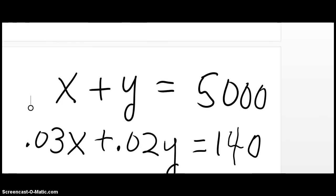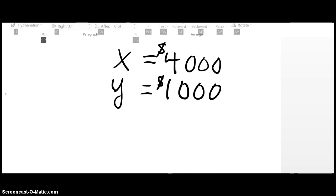Just like we did with the mixture problem, we sum up the W column: X plus Y equals $5,000. And we sum up the P column: 0.03X plus 0.02Y equals $140. Solve those systems of equations and you get X, the 3% amount, is $4,000, and Y, the 2% amount, is $1,000. And that is how you use the W times R equals P approach for mixture problems and interest problems.